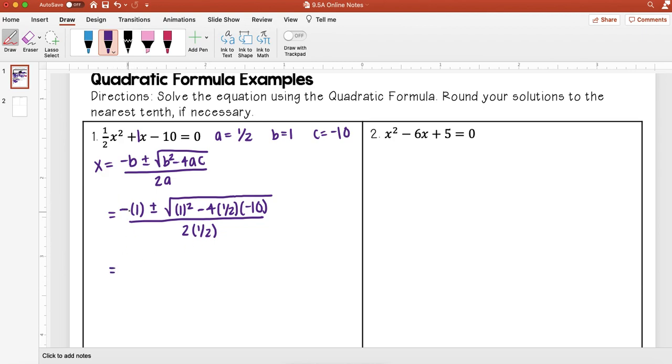Well, this first part just ends up giving me negative 1, plus or minus. 1 squared is just 1. And then negative 4 times one-half is negative 2. Negative 2 times negative 10, I get a positive 20. 20 over 1, because 2 times one-half is just 1.